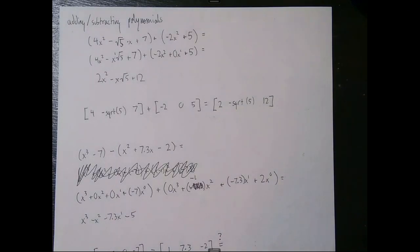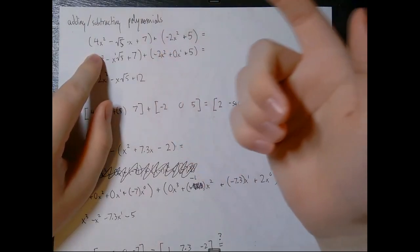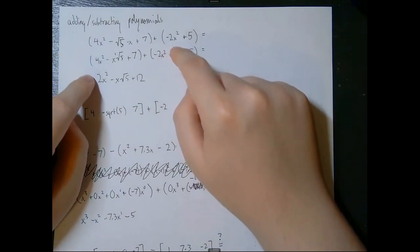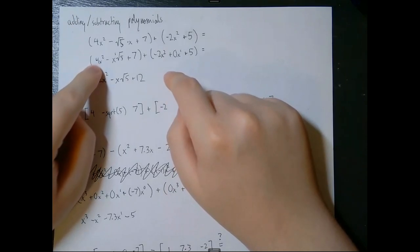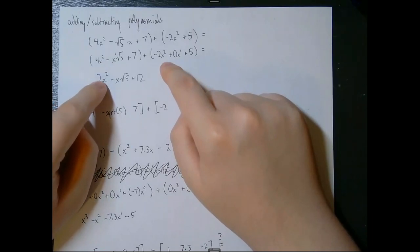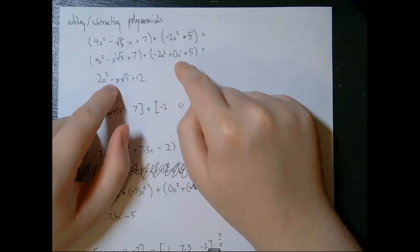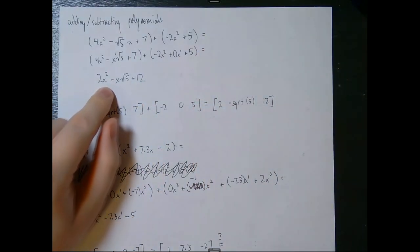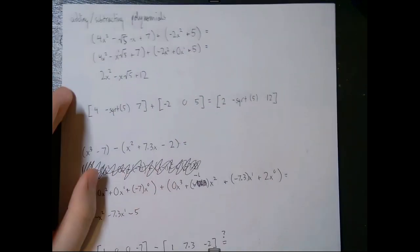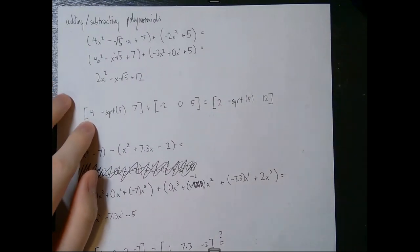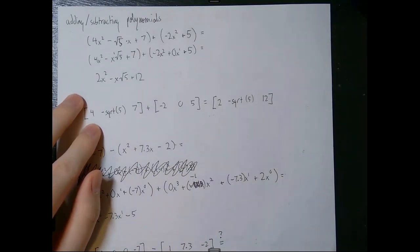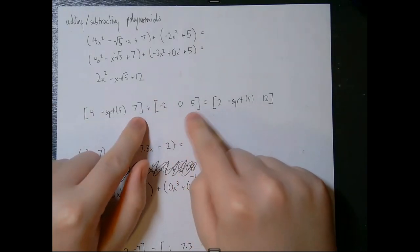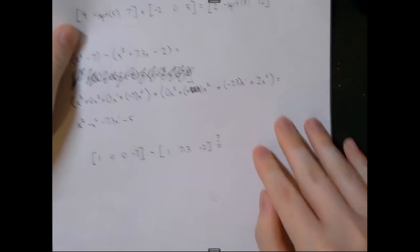The next topic is adding and subtracting polynomials. This should be familiar from calculus and algebra. If we have two polynomials, all we do is combine like terms: add 4x squared and negative 2x squared to get 2x squared, add negative root-5 times x and 0x to get negative root-5 times x, and add 7 and 5 to get 12. The resulting polynomial is 2x squared minus root-5 times x plus 12.